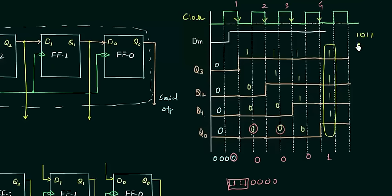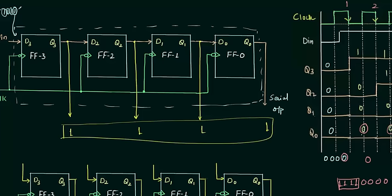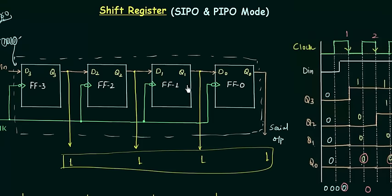The stored data can be any value — for example, I selected to store 1, 1, 1, 1. Once we reach that point, Q3 is 1, Q2 is 1, Q1 is 1, Q0 is 1. So we have our stored data available as the output as soon as we pass the 4th clock pulse. We don't require more clock pulses to get this data out of the IC. This is the advantage of serial input parallel output.